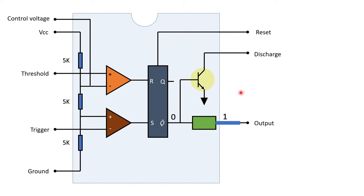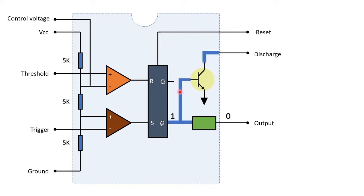This is how the signal is processed in IC555 from input to output. One section still remains: the discharging transistor. Q-bar is also connected to the discharging transistor. When Q-bar is 1, it activates the discharging transistor, resulting in some action depending upon the external circuit arrangement.